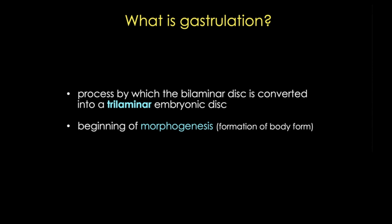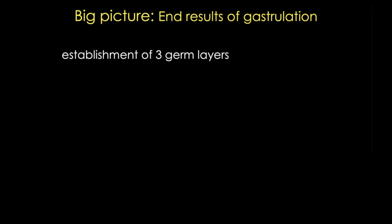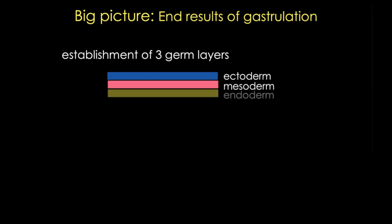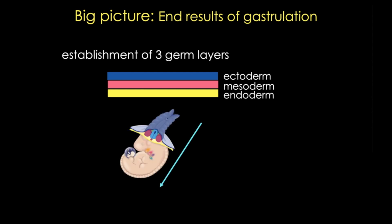What are the actual end results of gastrulation? Gastrulation establishes the three germ layers from which all tissues, organs, and cells in the body arise: the ectoderm, the mesoderm, and the endoderm. By the end of week three this process is pretty complete for the head region, but continues for the rest of the embryo. Our embryo is developing in a cephalic or cranial-to-caudal manner — head to tail or head to toe.